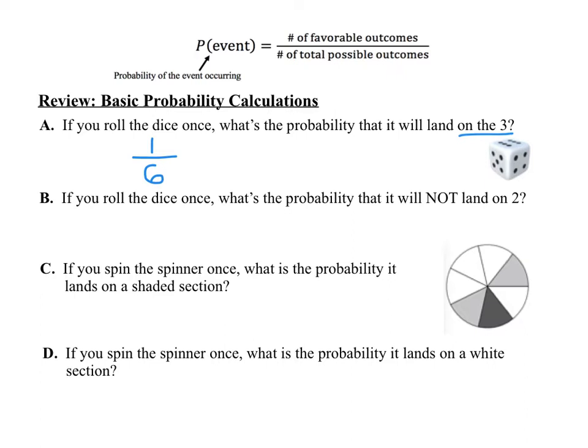If you roll a die once, what's the probability that it will not land on a 2? Not landing on a 2 means everything except 2. There's one 2 on a die, and 5 other numbers. So the probability of not landing on a 2 would be 5 out of 6.